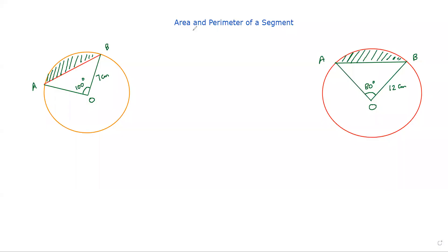I have to tell you how to find the perimeter of a segment. We have already covered how to find the area of a segment. Area of a segment is basically area of the sector, and then you take out the area of the triangle, like this shaded part in both of these diagrams that is showing a segment. We have also discussed that there can be cases where you have to find the area of the major segment.